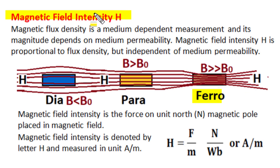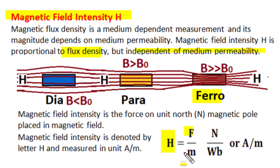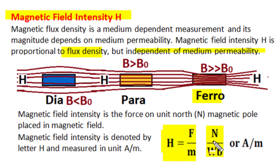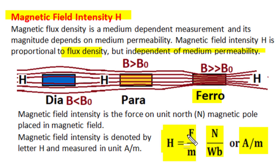Magnetic field intensity is defined as the force on one unit north pole placed in the magnetic field at any position. If force is measured in Newton and pole strength in Weber, the unit of magnetic field intensity is Newton per Weber. Popularly, magnetic field intensity is measured in ampere per meter. Its value depends upon source current and the geometric configuration of the observation position with respect to current distribution. H is a medium-independent magnetic property — its value does not depend upon medium permeability.